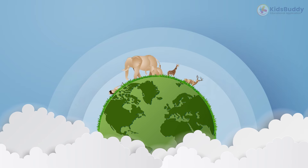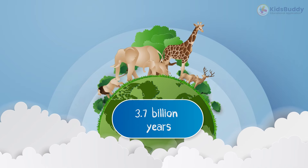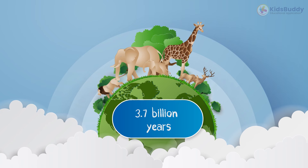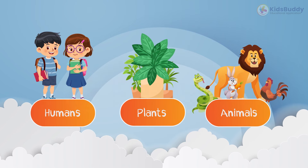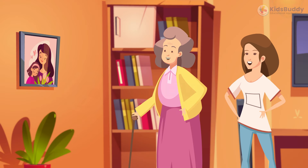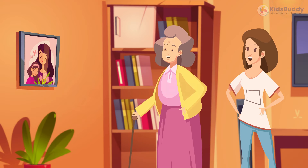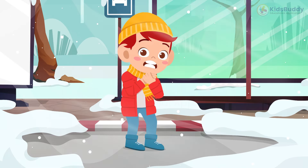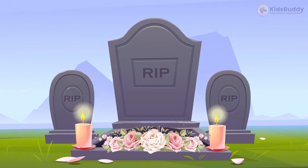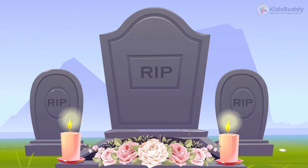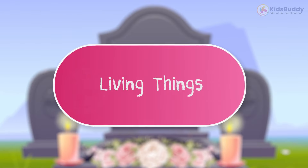Let us seek answers. Life on Earth originated around 3.7 billion years ago. It is the only known planet bestowed with humans, plants, animals, and many other creatures. If you notice, all of them possess specific characteristics: they grow with time, respire to survive, and reproduce their species. They react to the external environment through senses, and move from one place to another. And lastly, they have a particular life span and are not immortal. All these characteristics make them belong to the class of living things.